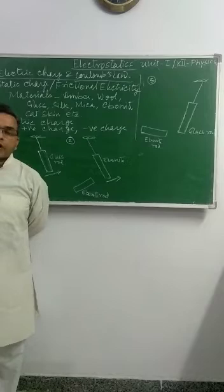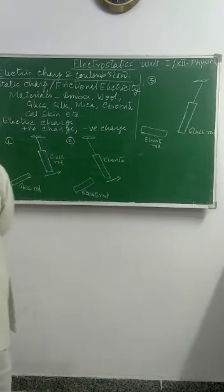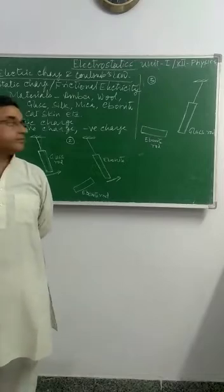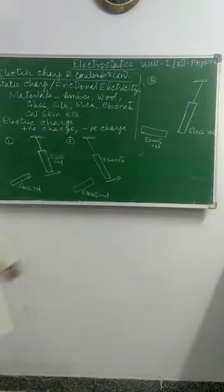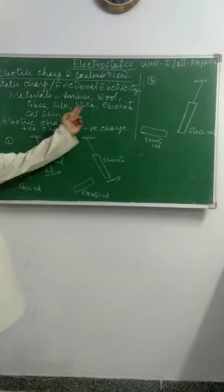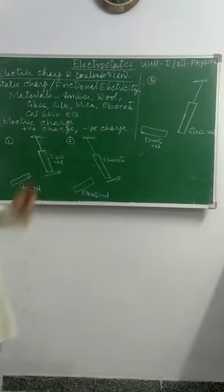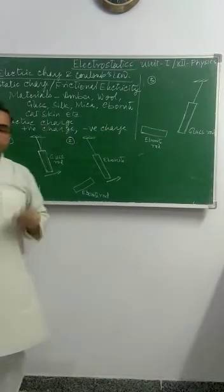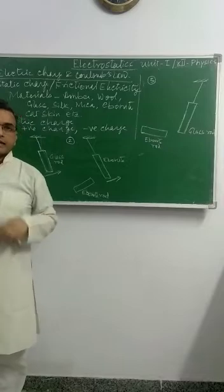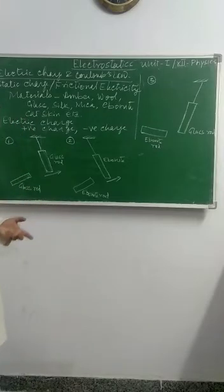Not just these two materials, there are a number of such materials: Glass, Silk, Mica, Amorite, Cat skin, Spur, Lac, Sulphur, Bakelite, Mica, etc.